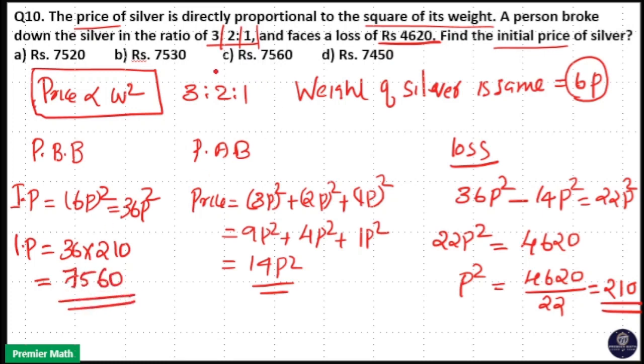So option C is your answer. Initial price of the silver is 7560.